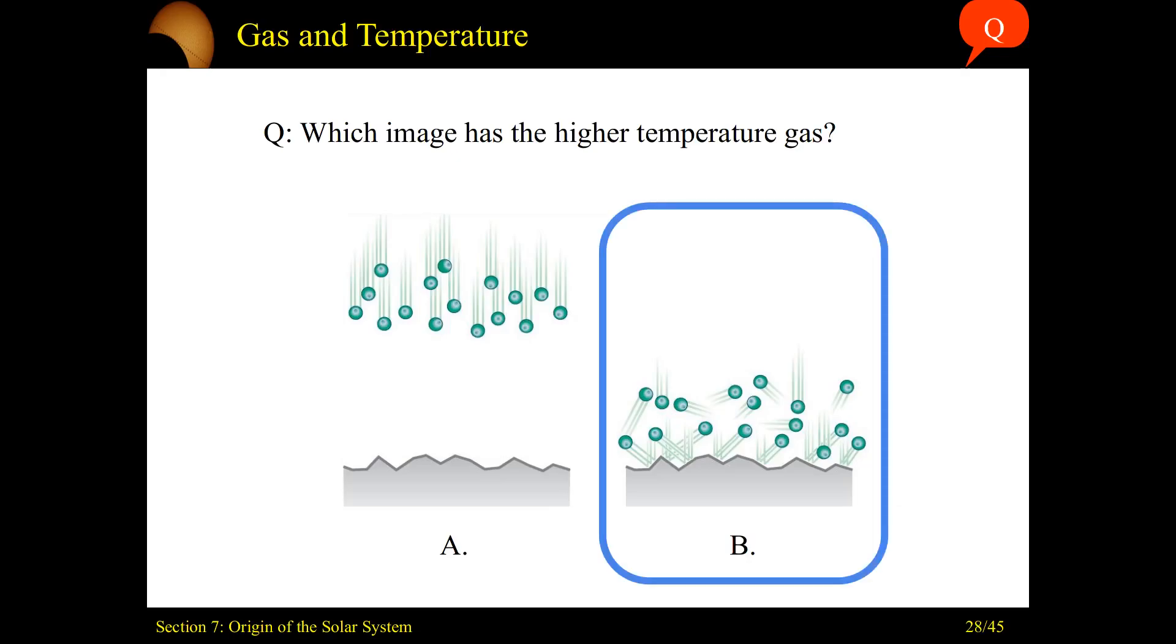Gas B will have a greater temperature. When you have all your particles lined up, you're going to see that this is a lower pressure. Everyone's moving in the same direction, or about the same direction, and that reduces the overall temperature of the system.